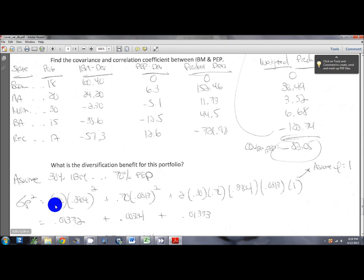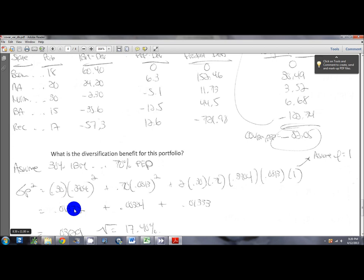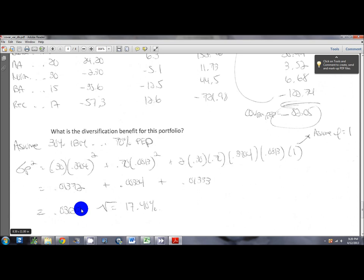Each one of these guys is squared. It's the weight of the second asset times the standard deviation of the second asset, that whole term squared, plus two times the weight of one, the weight of two, standard deviation of one, standard deviation of two. The first step in diversification benefit is you always assume perfect positive correlation and figure out what the standard deviation of the portfolio is using that number. So that results in these three numbers. You add those numbers up, you get this. This would be the portfolio variance. Take the square root of that number, it gives you 17.4.